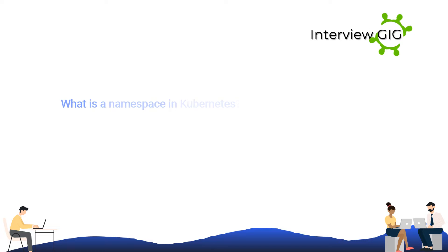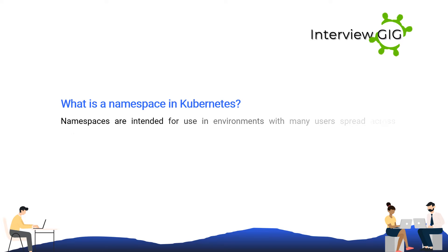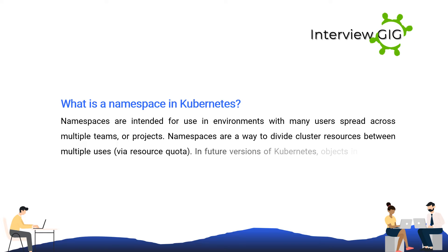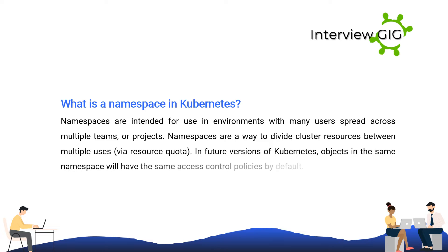What is a namespace in Kubernetes? Namespaces are intended for use in environments with many users spread across multiple teams or projects. Namespaces are a way to divide cluster resources between multiple uses via resource quota. In future versions of Kubernetes, objects in the same namespace will have the same access control policies by default.